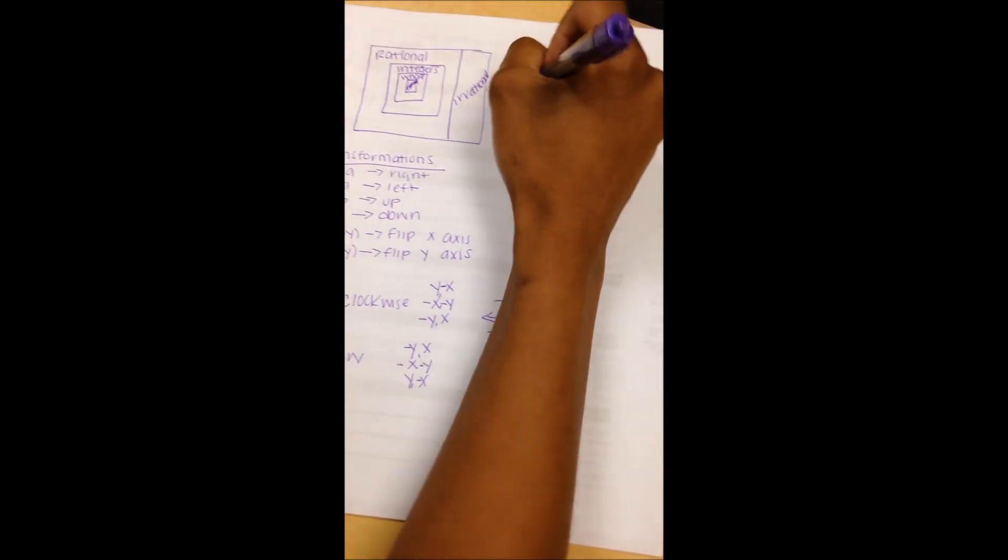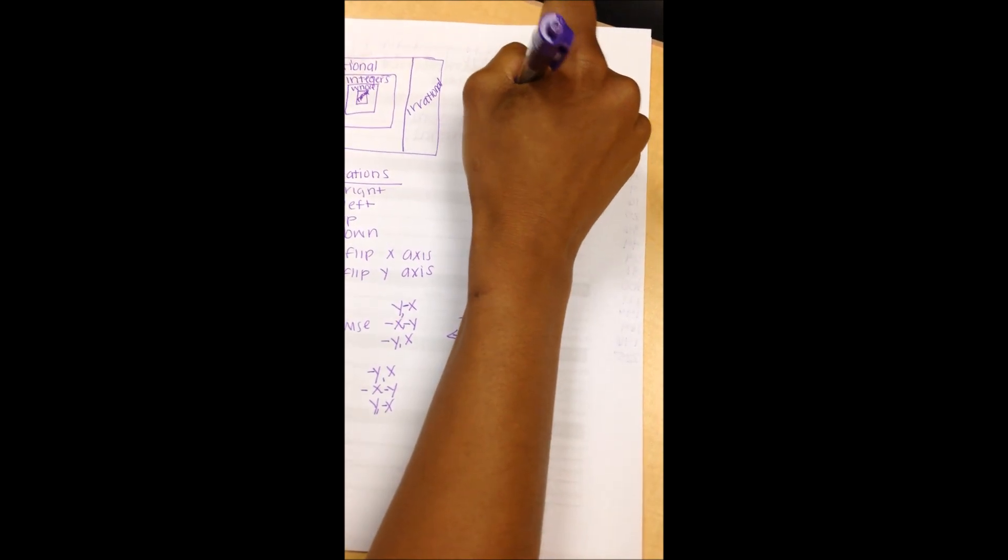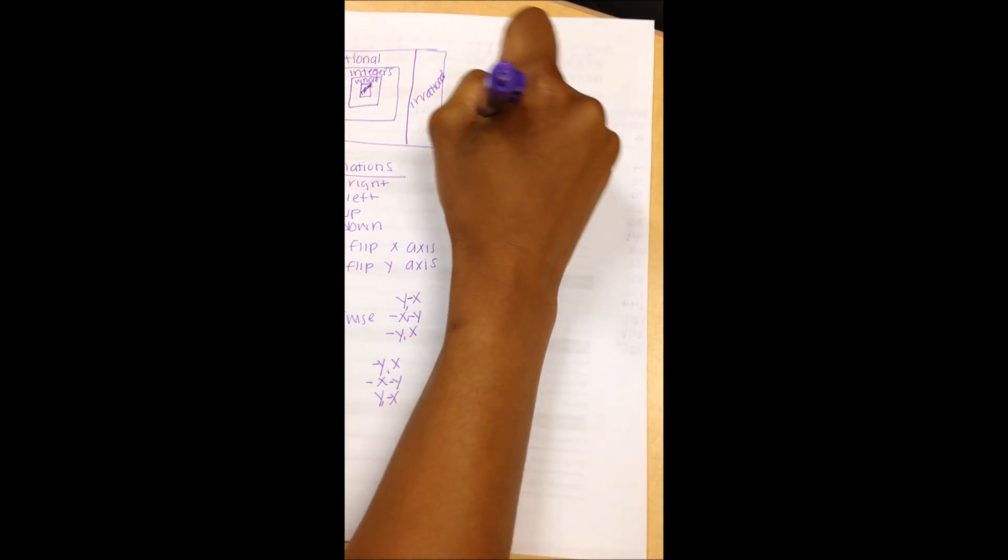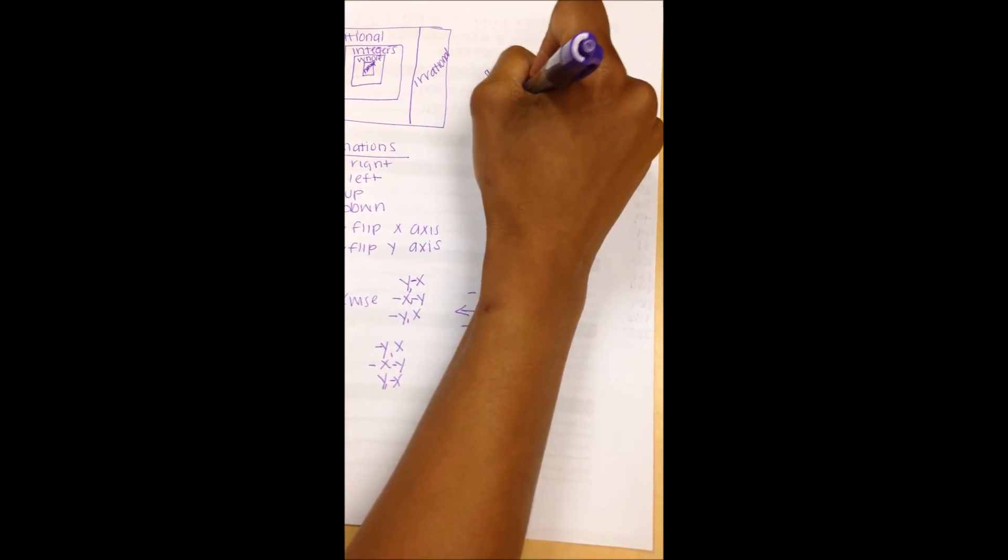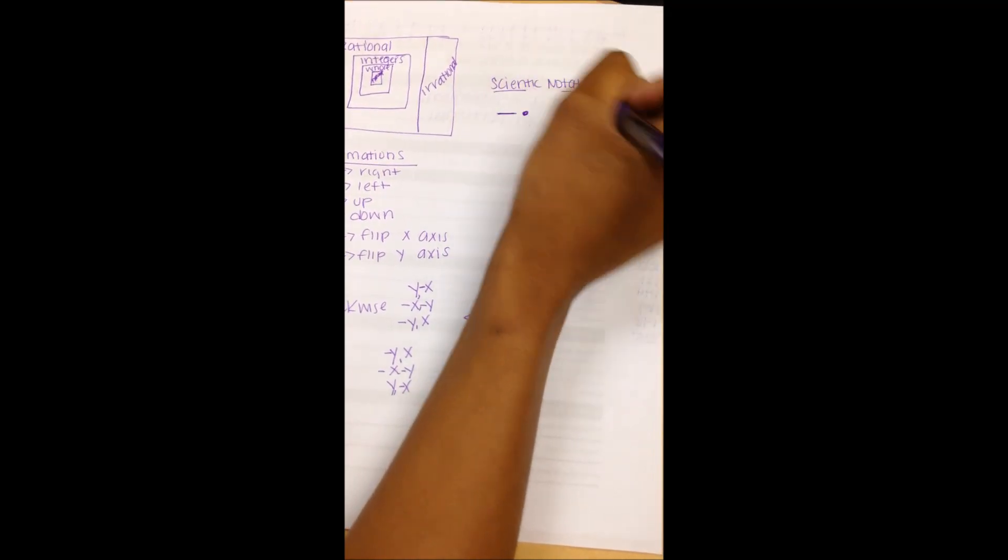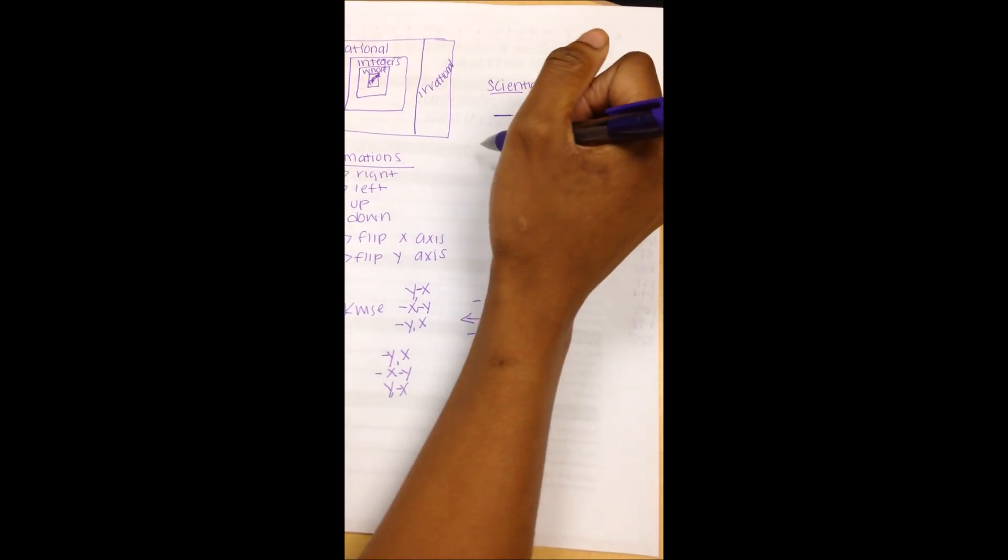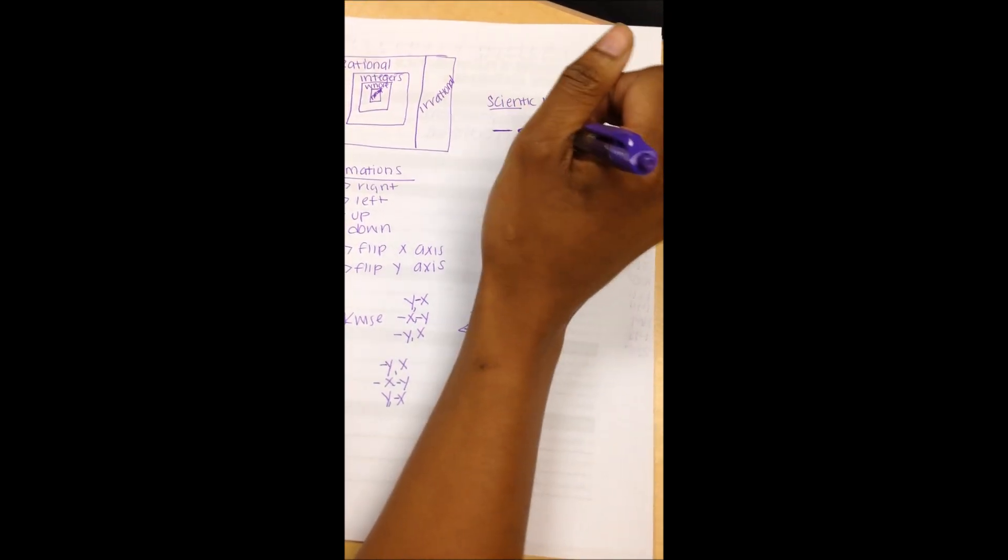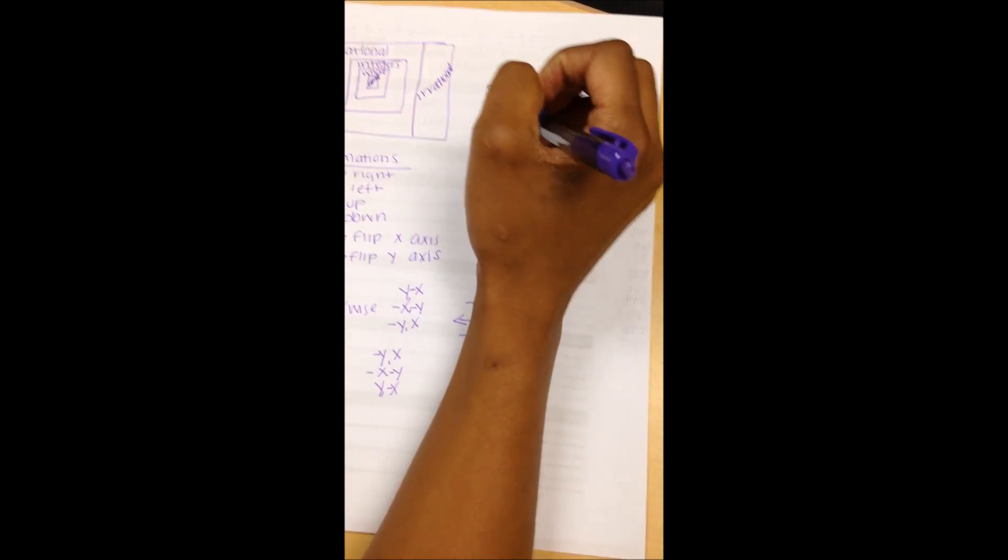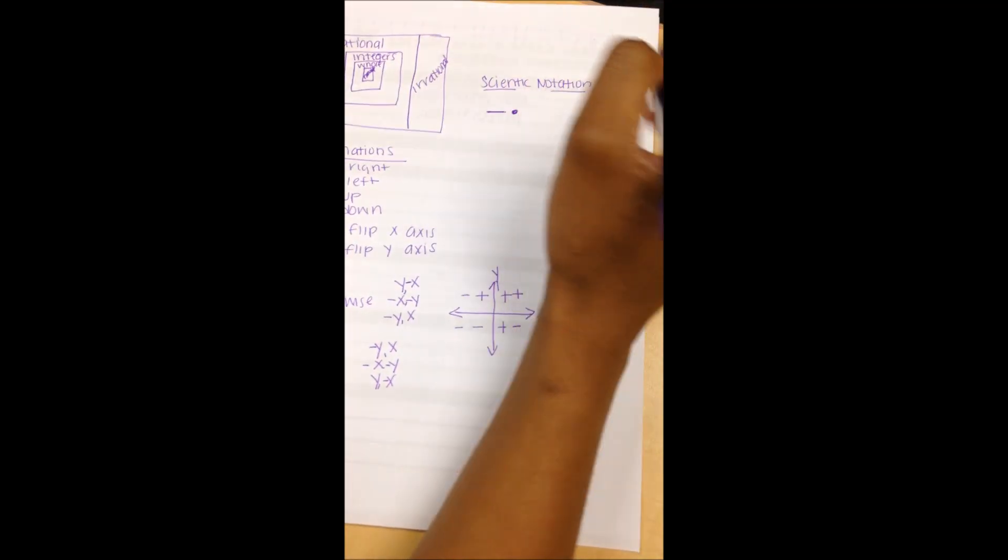Oh, scientific notation. Note that there can only be one digit in front of the decimal. Only one digit belongs in front of the decimal. So that should give you a hint about how many places you should move your decimal, or what your coefficient should be when you're converting the number from standard form to scientific notation.